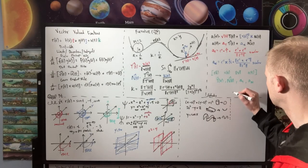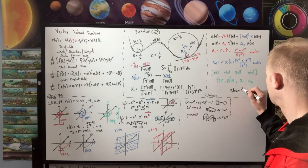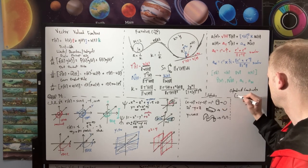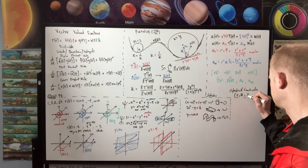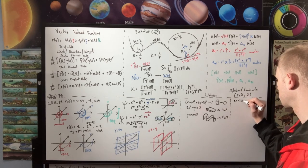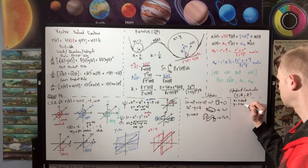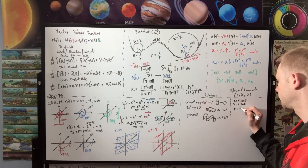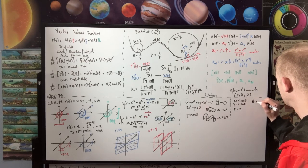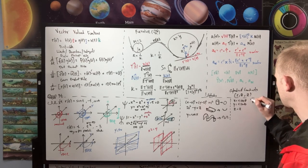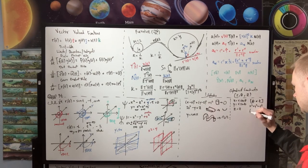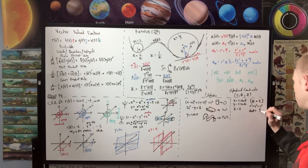As a side note, we should also consider cylindrical coordinates: (r, θ, z), where x = r cos θ, y = r sin θ, and z = z. We also have x² + y² = r² and tan θ = y/x.